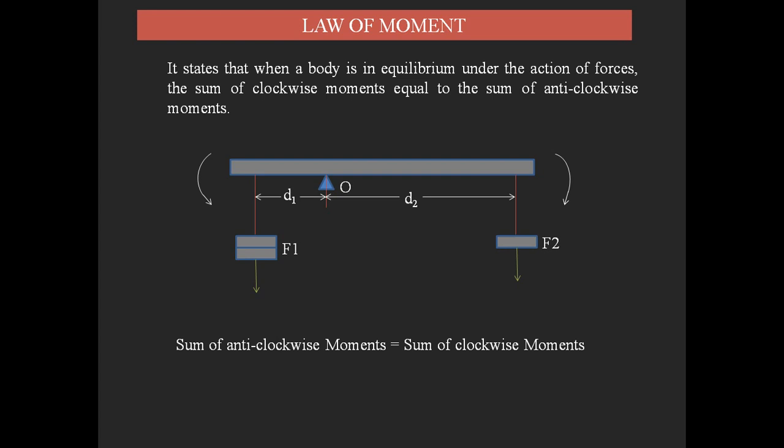The clockwise moment is for F2 and the anticlockwise moment is for F1. Applying the Law of Moments: the sum of anticlockwise moments equals the sum of clockwise moments. The anticlockwise moment from F1 is written as F1 × D1, and the clockwise moment from F2 is written as F2 × D2. This is how we write the formula according to the statement of the Law of Moments.